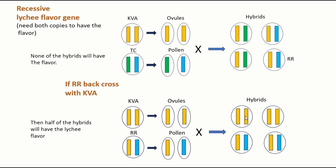They both have the same genes. The other two combinations — when yellow meets blue it just has one copy, and this one meeting that one also has a single copy. But in general, of the four possible types of hybrid, half of them will have the lychee flavor. So that's what the backcross is about.